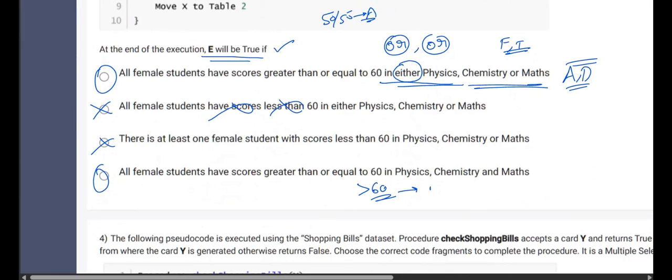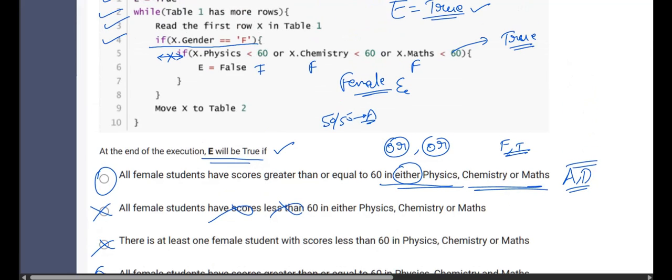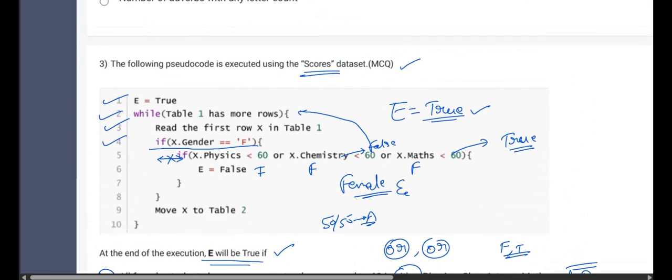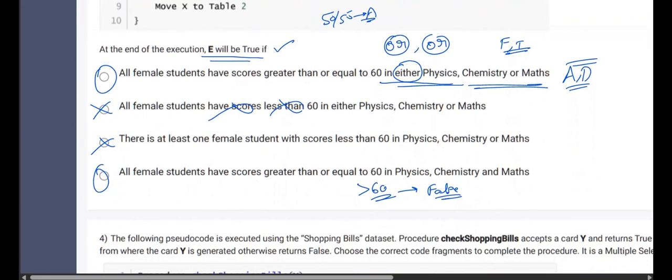Whereas for option D, it is always greater than 60. That means step five will always evaluate to false. If this is false, then what will E become? E becomes true. So in that way, E remains to be true if all the girls students scored greater or equal to 60 in all the subjects called physics, chemistry and mathematics.